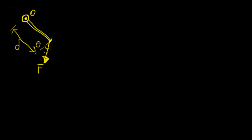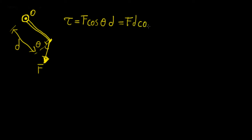In two dimensions, when we have a force applied at some arm and that arm is allowed to rotate about some pivot point with the force applied at some angle, we calculate the torque by multiplying the total perpendicular distance between the pivot point and the point where the force is applied by the perpendicular component of that force. So torque is defined as Fd·cosθ — the rotational equivalent of force.